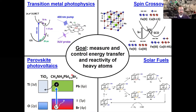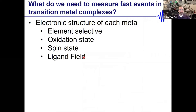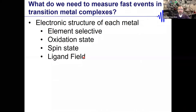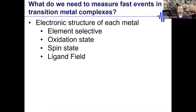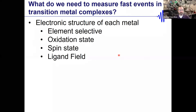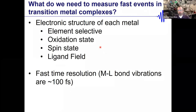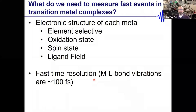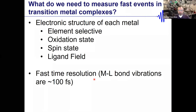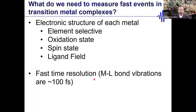The basic idea is: if we're trying to measure fast events in transition metal complexes — things like spin crossover or finding transition states and reactive intermediates in catalytic reactions — we really need to know the electronic structure of each metal. We want to be element-specific at the oxidation state, spin state, and ligand field. Critically, we need fast time resolution, because metal-ligand bond vibrations are on the order of 100 femtoseconds.